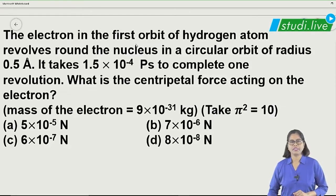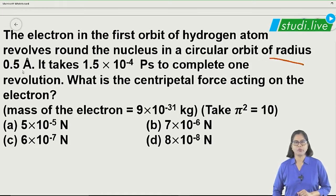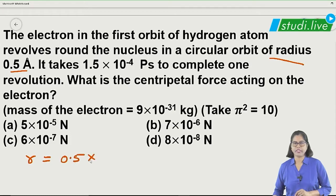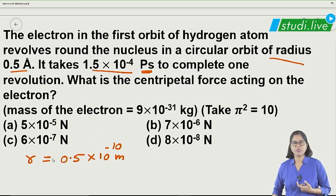Let us go to the next question. Here it is given that the electron in the first orbit of the hydrogen atom revolves around the nucleus. The radius of the orbit is given as 0.5 angstrom units, meaning 10 raised to minus 10 meters. It is also given in picoseconds — the time to complete one revolution — so that is the periodic time T.